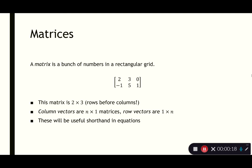So right here, this 2, 3, 0, minus 1, 5, 1 is a 2 by 3 matrix. 2 rows and 3 columns. We always put rows before columns.